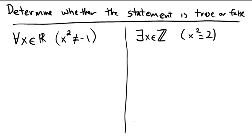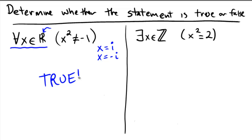First problem on the left: the upside-down A means 'for all.' So we're saying for all x from the real numbers, is it true or false that x squared doesn't equal negative 1? Do you know any numbers which squared equal negative 1? There's really only a couple — x equals i, because i squared is negative 1, and x equals negative i, because negative i squared would also be negative 1. But notice that our universal quantifier is over ℝ, which is over all real numbers. So there are a couple numbers that don't work, but they're not in ℝ. Therefore, this statement is a true statement.